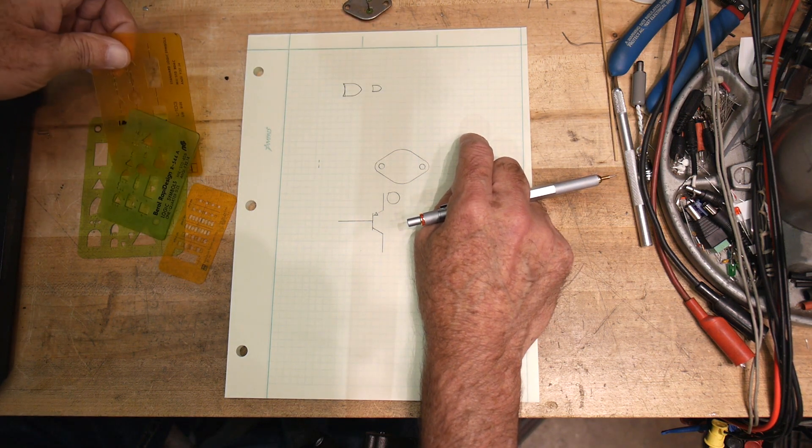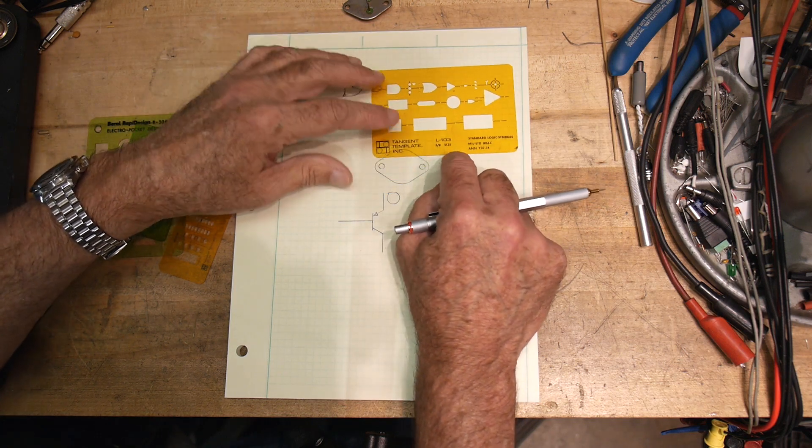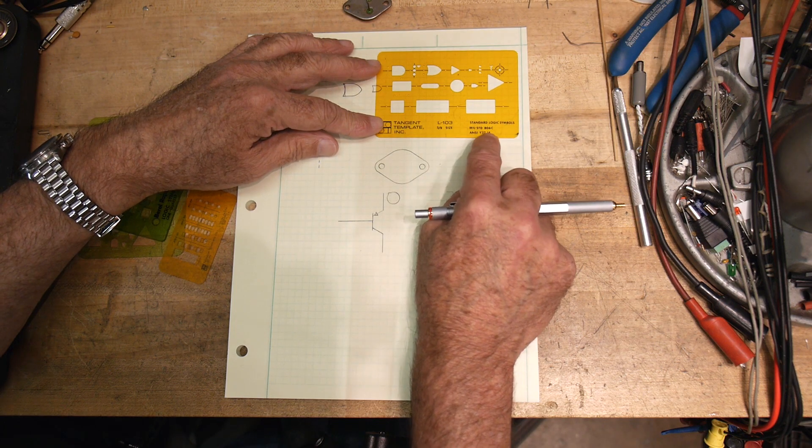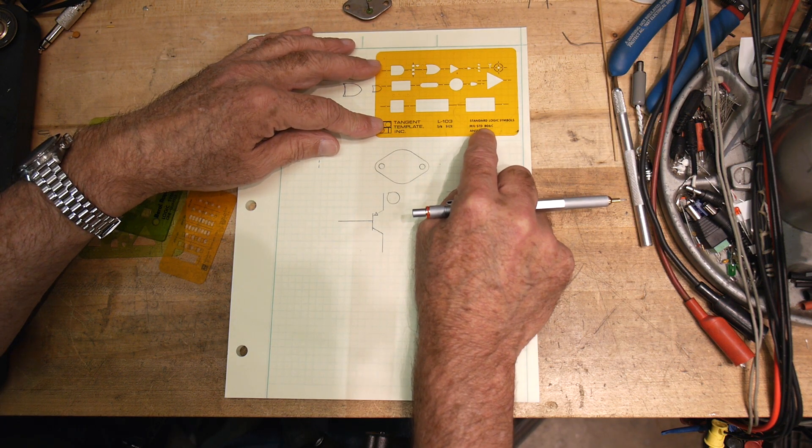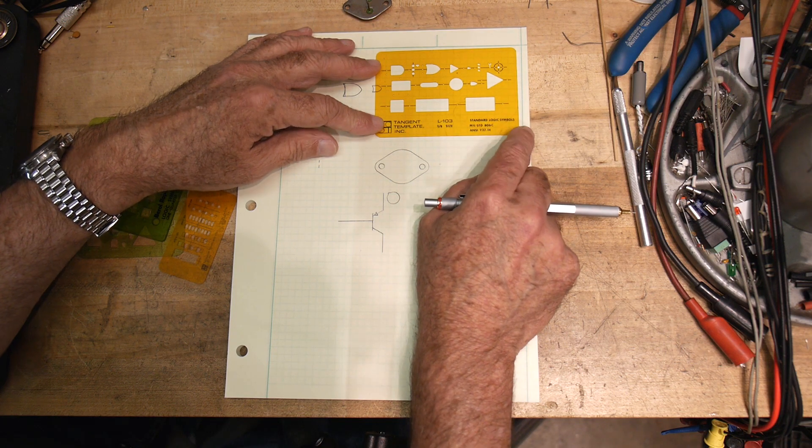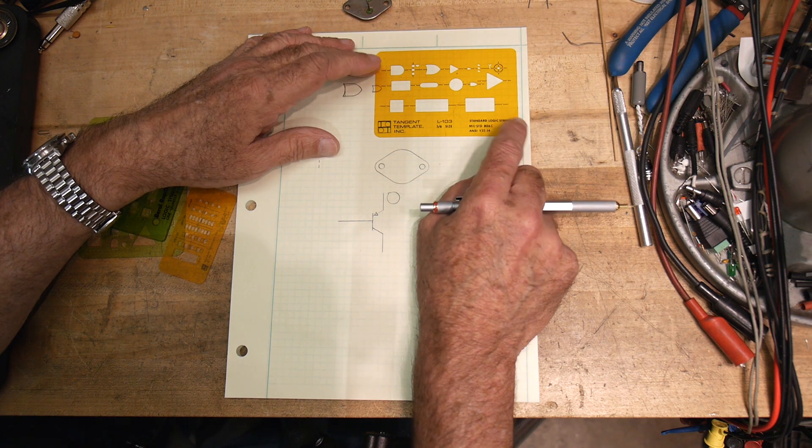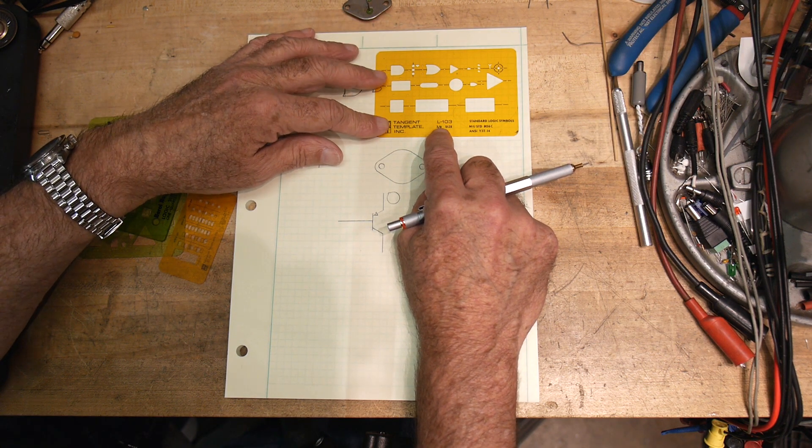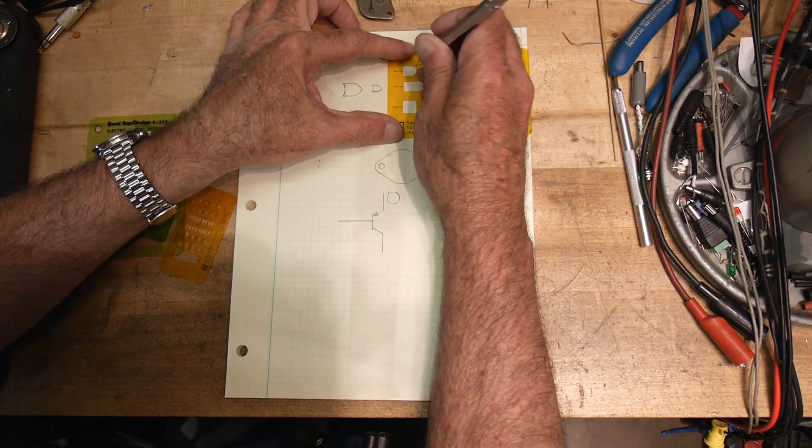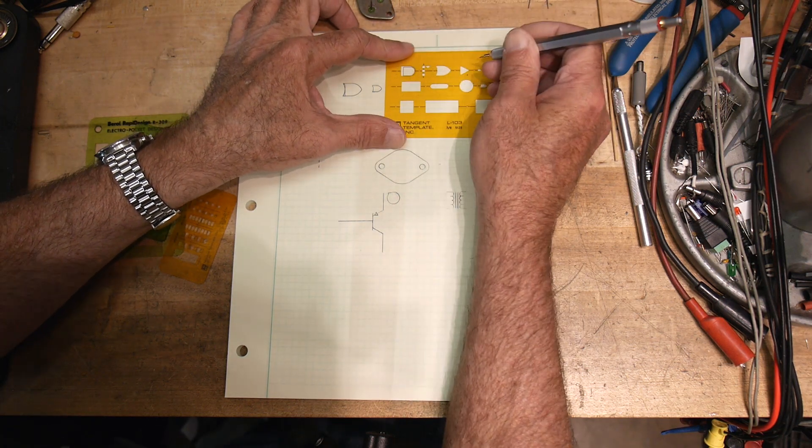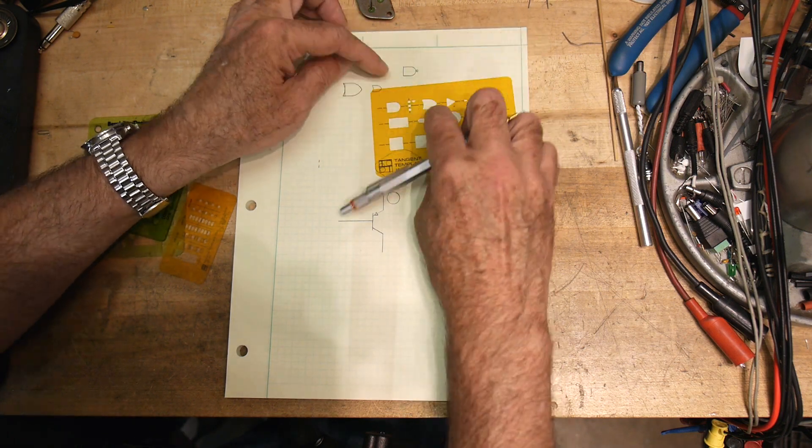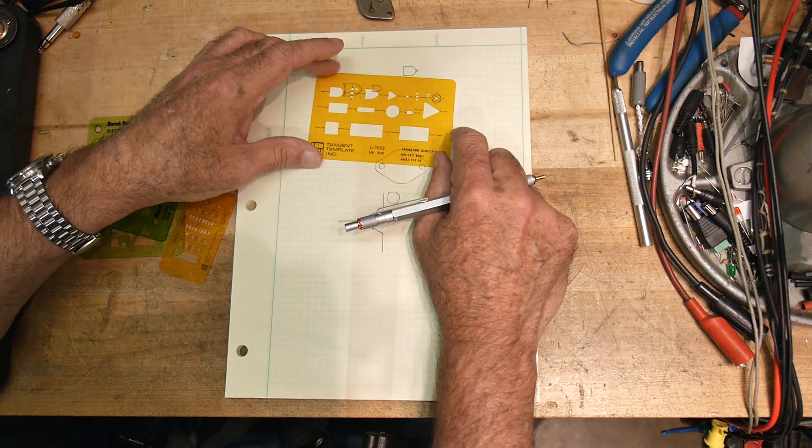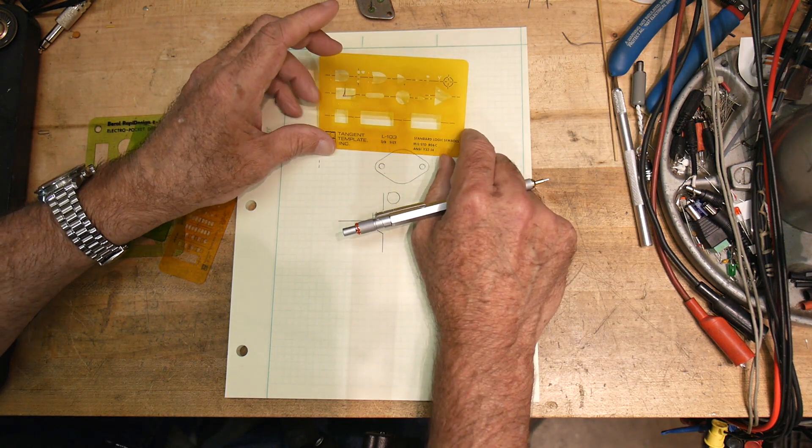All right. We're getting smaller and smaller now. This one looks very much like it. This is again by Tangent Template Incorporated. A MIL standard 806C. There's a lot of drawing standards for the military. That makes sense. This is three-eighths size. Interesting. Three-eighths. It's got the normal logic gate, and then it's got the little circles. So you could put the little circles on there. Make it a NAND gate. That's a nice one. Good size.